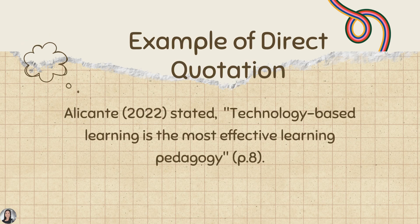This is an example of direct quotation. The author is Alicante and it is published in 2022. It is stated, then comma, 'technology-based learning is the most effective learning pedagogy,' which are the exact words taken from Alicante. We say so because these words are enclosed in quotation marks, and the page number is added to the in-text citation — P.8 in parenthesis — with the period placed after the end of the page number.